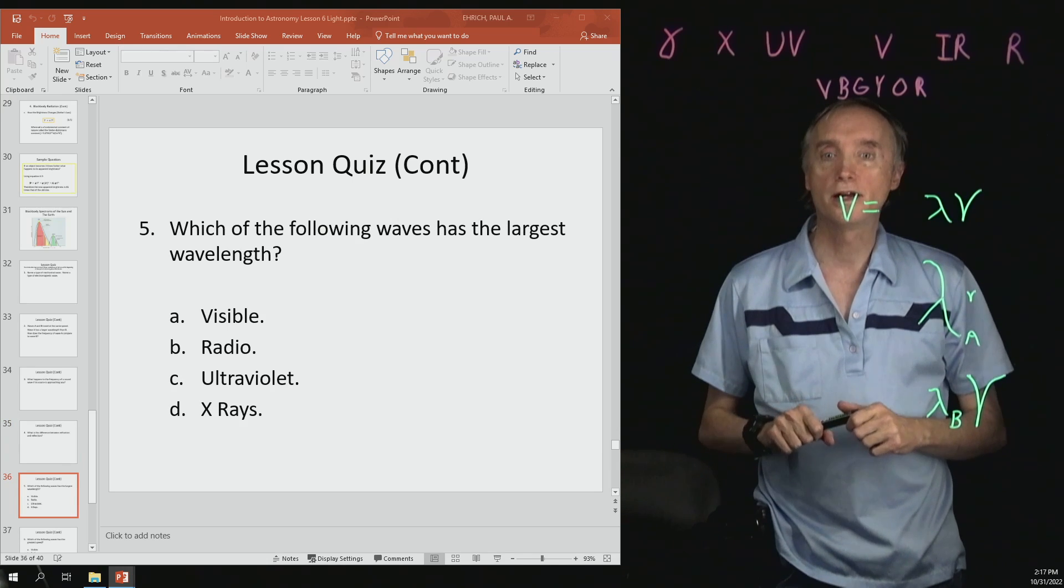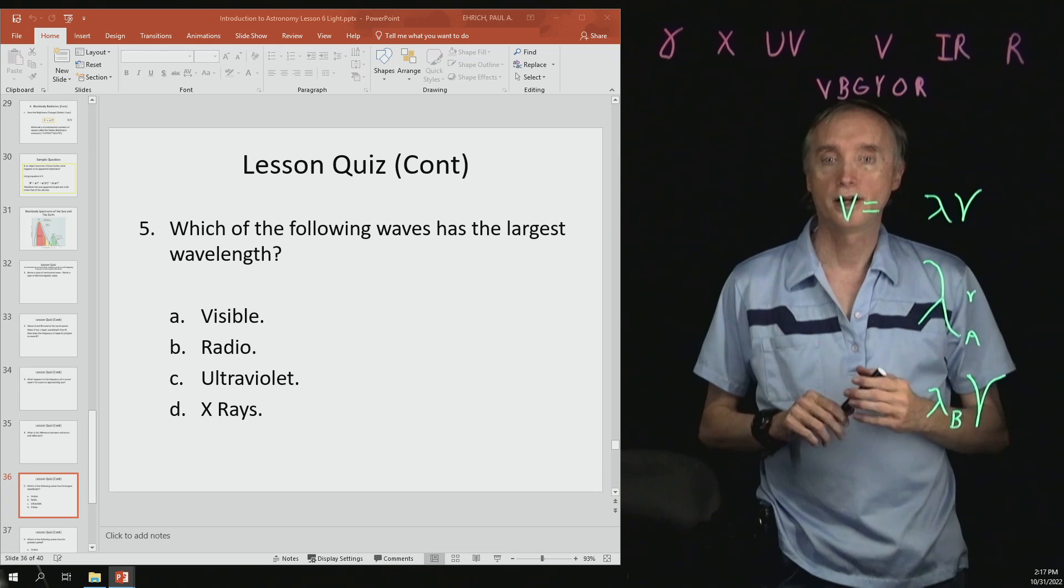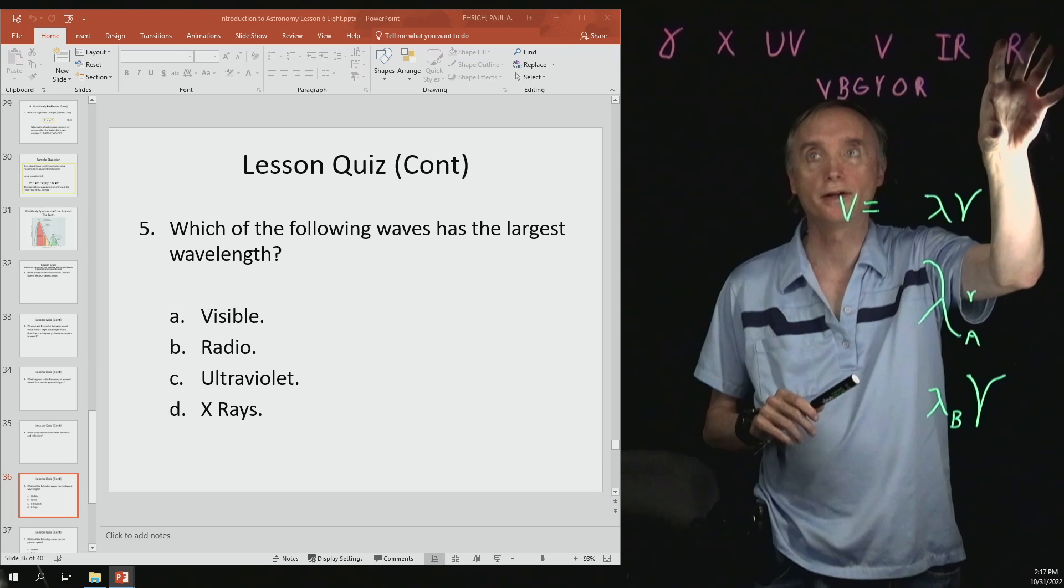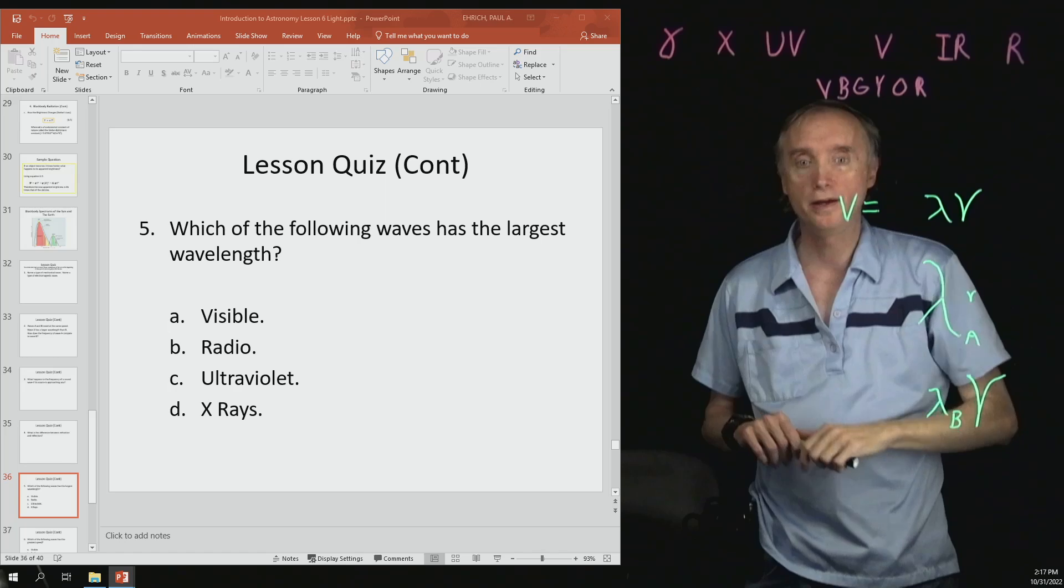Which of the following waves has the largest wavelength? Remember this side over here has the largest wavelengths, and then this side has the smallest. So it would be radio.